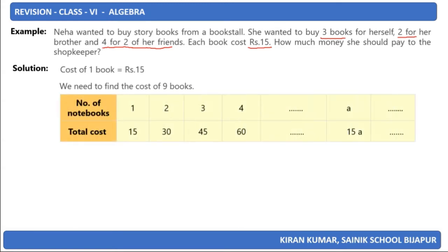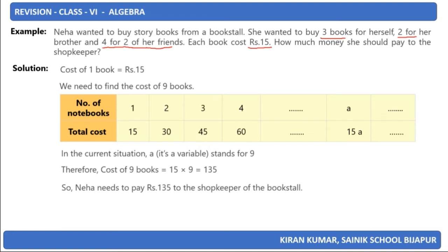Let me make a table. For 1 book it is Rs 15, for 2 books Rs 30, for 3 books Rs 45, for 4 books Rs 60. If I consider A numbers, it will be 15 times A. In this situation, A is a variable. It stands for 9, therefore the cost of 9 books will be Rs 15×9=Rs 135. So Neha needs to pay Rs 135 to the shopkeeper for the books she purchased.